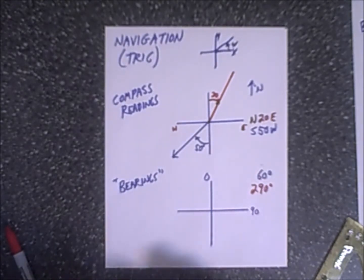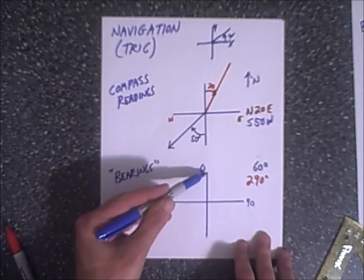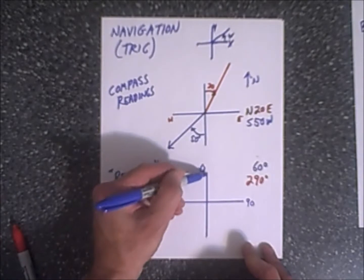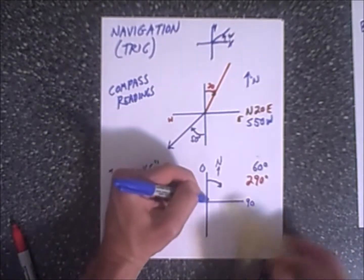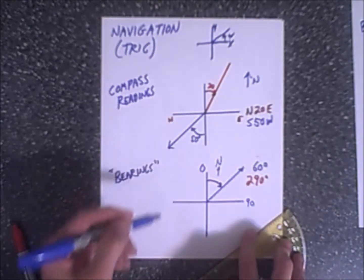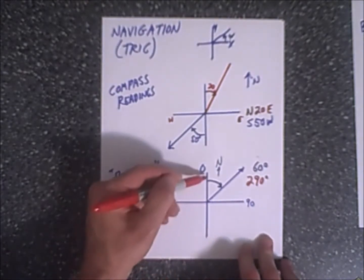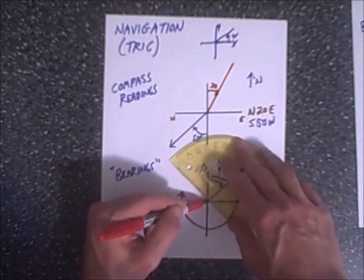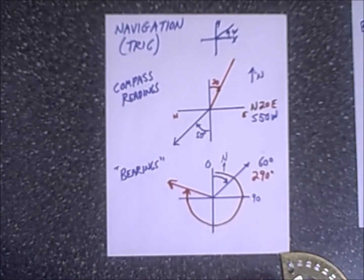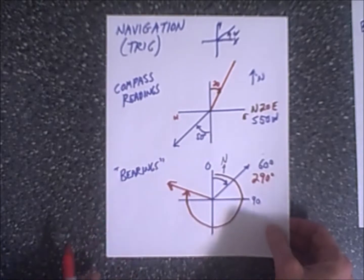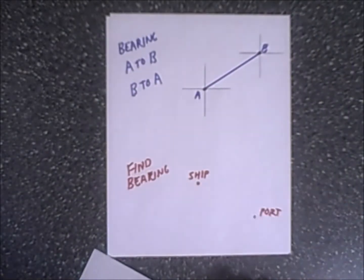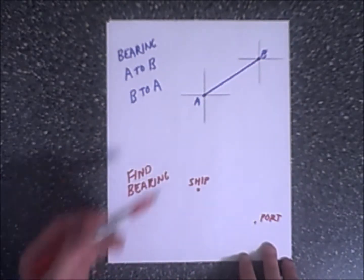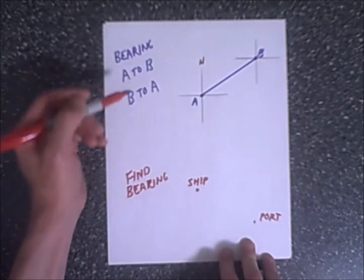Bearings are another way to express direction. You always start at due north, which is zero, and instead of going counterclockwise, you go clockwise. For example, if you have 60 degrees, you start at north and go 60 degrees clockwise to get that direction. If you have 290 degrees, you again start at zero and go clockwise — 90, 180, 270 — and end up with a bearing of 290 degrees.